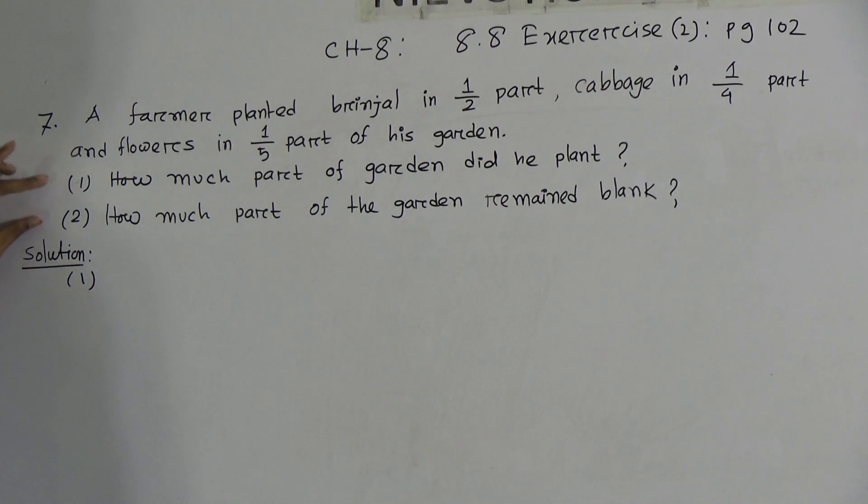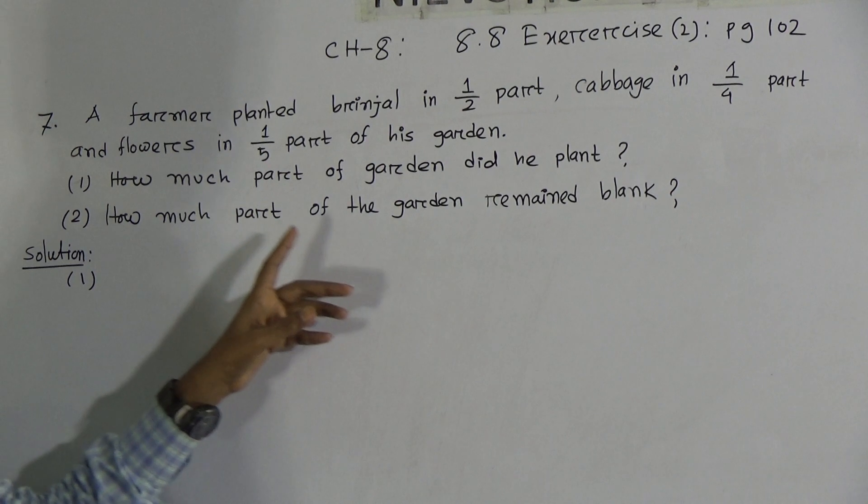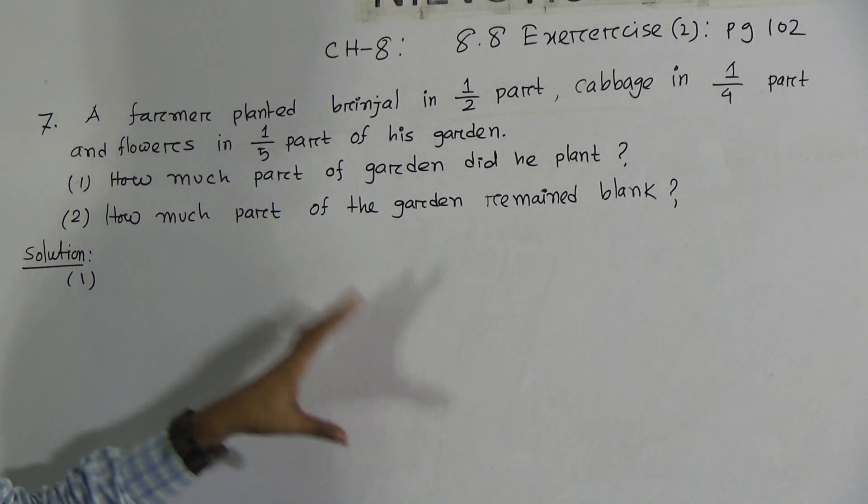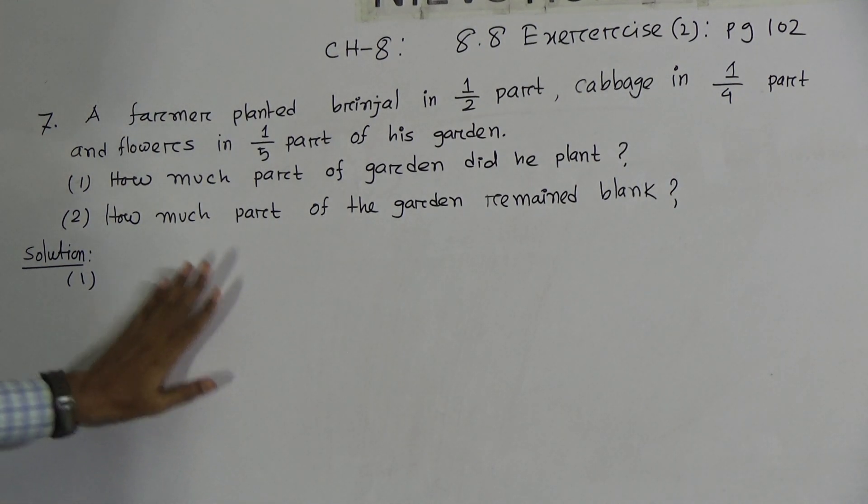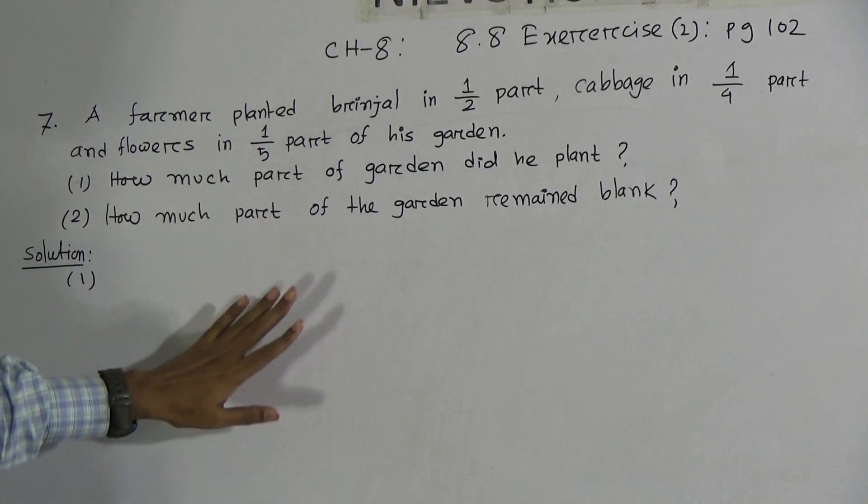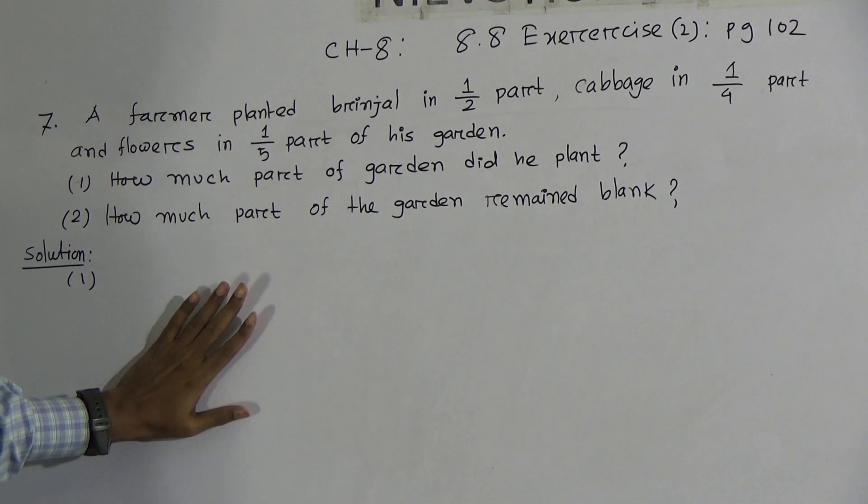Now using this information you have to solve question number 1 and 2. Number 1: How much part of garden did he plant? We have to determine how much part of garden did he plant. Now we will solve number 1.